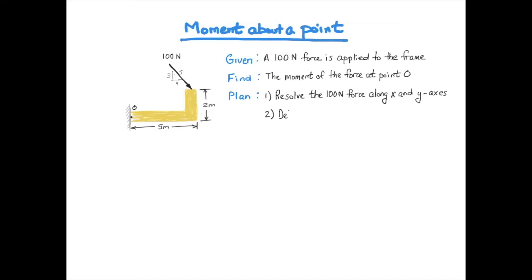We'll determine the moment M sub O, using a scalar analysis in this case, for the two force components to the 100N vector, and then we'll add those two moments together to find the total moment. So we'll break the 100N force down into its y and x components, and use the distances around the point of the origin, point O, shown here.